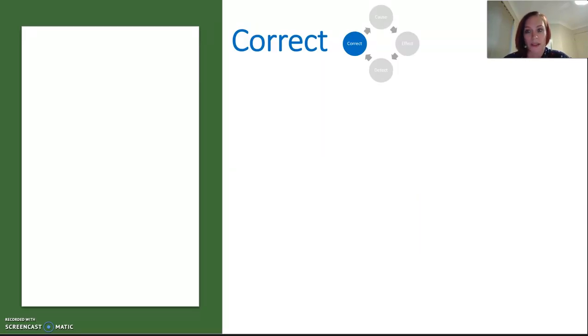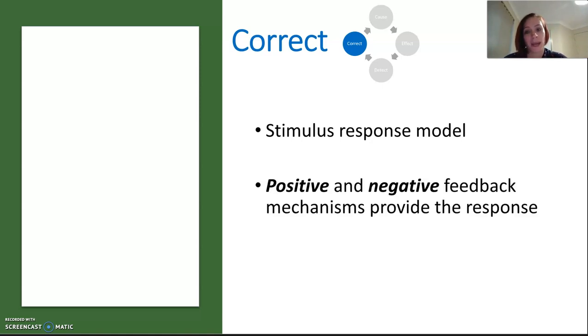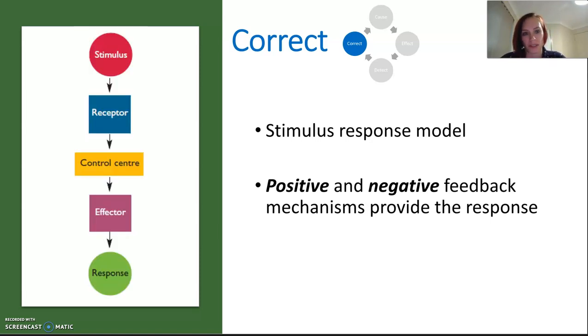In order to correct things, your body must use the stimulus response model. Your body receives some stimulus, a receptor is detecting it—it might be from the nervous system or any kind of chemoreceptor. You're then getting information to your control center, like your brain or central nervous system. Your body then has to use an effector, like a muscle or endocrine gland, to make that change. The response should be systematic or localized—it could apply to the whole body or be specific to one organ or muscle.